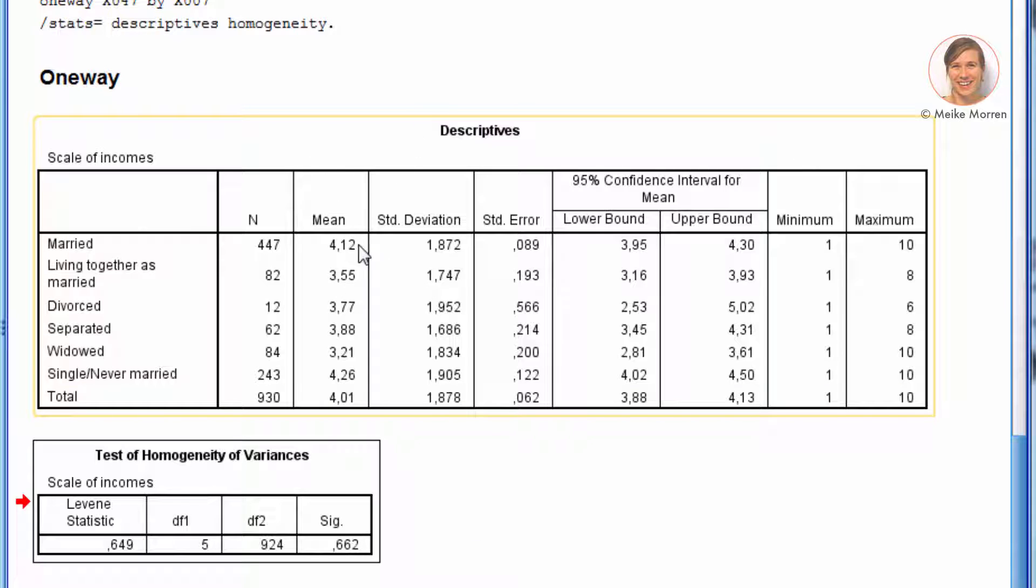Now, in this first table descriptors, you see the mean, and these are actually tested in ANOVA. We test whether these means are different given the standard deviation of these groups. Now, as you can see, the single people have the highest income. After that, the married people, and then the separated people, and divorced people. Lastly, living together as married, and the widowed people are the poorest in this sample.